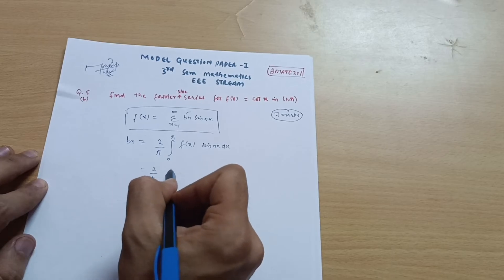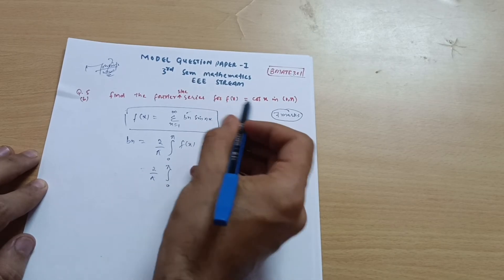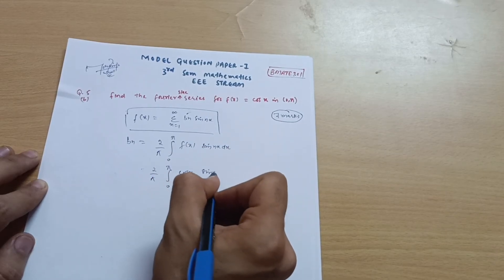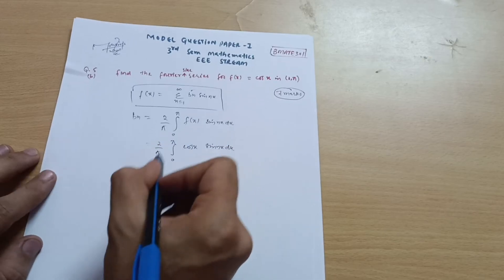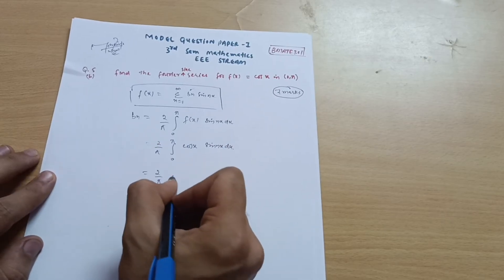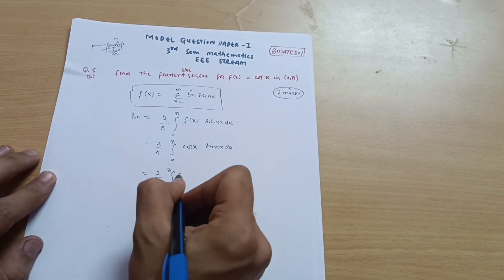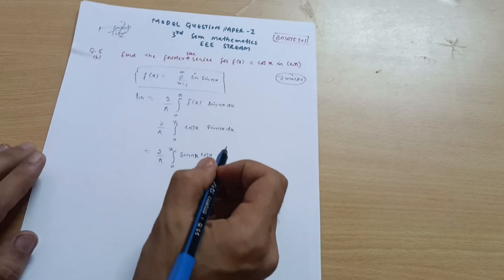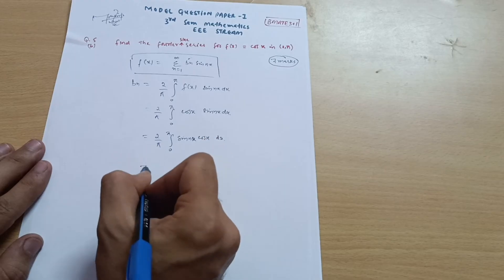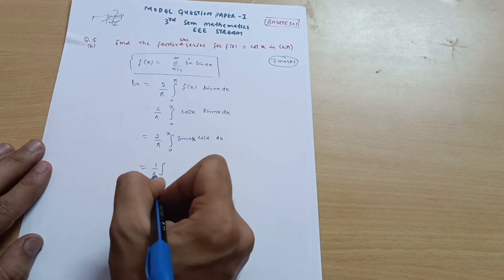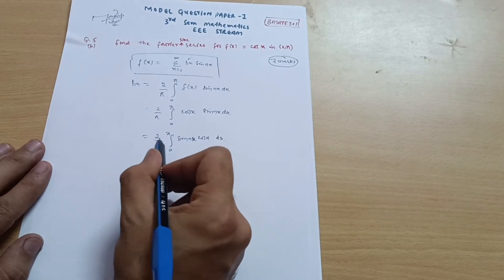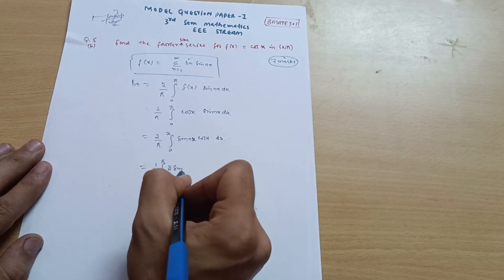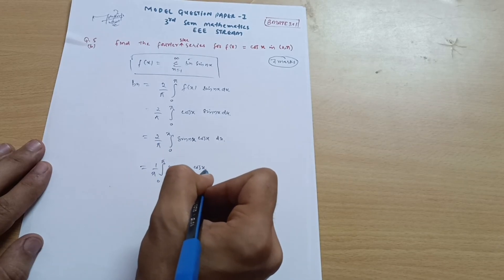Now let us solve it. This is b_n = (2/π) times the integration from 0 to π of cos(x)·sin(nx) dx. I can rewrite this as (1/π) times the integral from 0 to π of 2·sin(nx)·cos(x) dx, bringing the 2 inside.